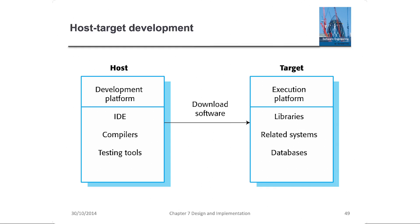On the right side is our target, the execution platform where the software comes to life. Here we find the necessary libraries, related systems, and databases that support the running application. It's important to note that these platforms often differ significantly. The development platform is equipped with tools tailored for building and testing software, while the execution platform is optimized for running the software efficiently, possibly on a completely different architecture.